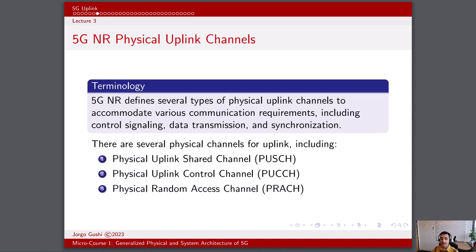5G NR defines several types of physical uplink channels to accommodate various communication requirements, including control signaling, data transmission, and synchronization. The physical uplink control channel, PUCCH, is used for transmitting uplink control information, acknowledgements, and channel state information reports, operating in different formats to accommodate various types of control information. The physical uplink shared channel, PUSCH, is the primary channel for transmitting user data in the uplink, supporting data and control information transmission and utilizing adaptive modulation and coding schemes.